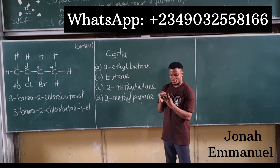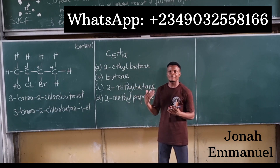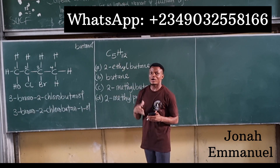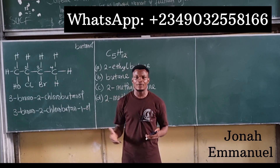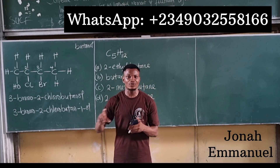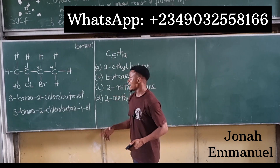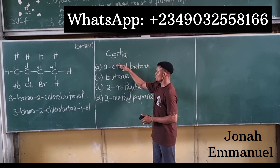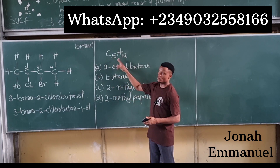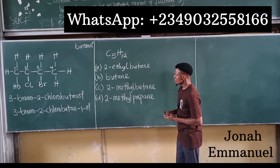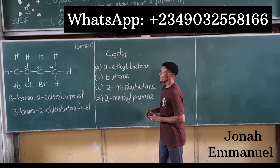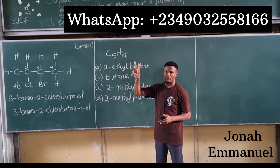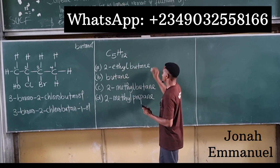The next question says an isomer of C5H12 is blank. Isomers are compounds with the same molecular formula but different structures, so I need to find which option has 5 carbons and 12 hydrogens. Ethylbutane: butane is 4 carbons, ethyl is 2, giving 6 — not the answer. Butane alone is 4 carbons — also not the answer.